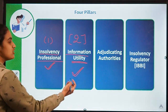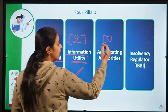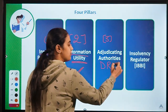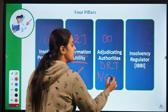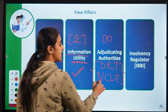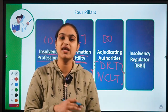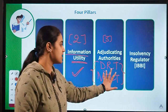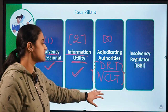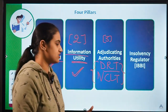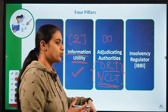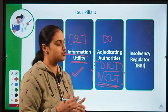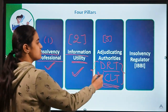The third pillar is adjudicating authorities. Other than debt recovery tribunals, we also have the National Company Law Tribunal (NCLT). Both of these are the adjudicating authorities handling insolvency and bankruptcy cases. For individuals, cases are covered by debt recovery tribunals. For corporate insolvency resolution, NCLT handles the process. So we don't need to approach ordinary courts — these specialized tribunals are set up for insolvency resolution.